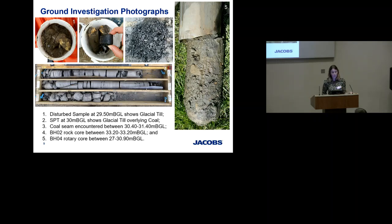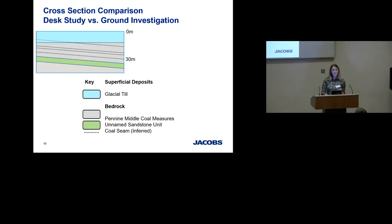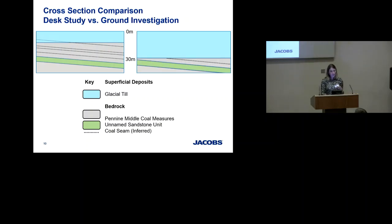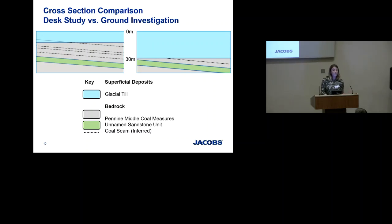Comparing the two cross sections side by side - the desk study cross section versus our ground investigation cross section - you can see the difference in thickness of the superficial deposits, and also the fact that we only encountered one coal seam. When I was on site, I originally thought the coal seam we'd encountered was the Main coal seam and that the 14-metre depth from the desk study was incorrect. However, back in the office, using trigonometry with the regional dip of four degrees, I realised what we'd actually encountered was probably the Maudlin coal seam. The desk study said we should get that within 30 metres - we got it at 30.5, so that's quite similar. This led me to think: what has happened to the Main coal seam? Why didn't we encounter it?